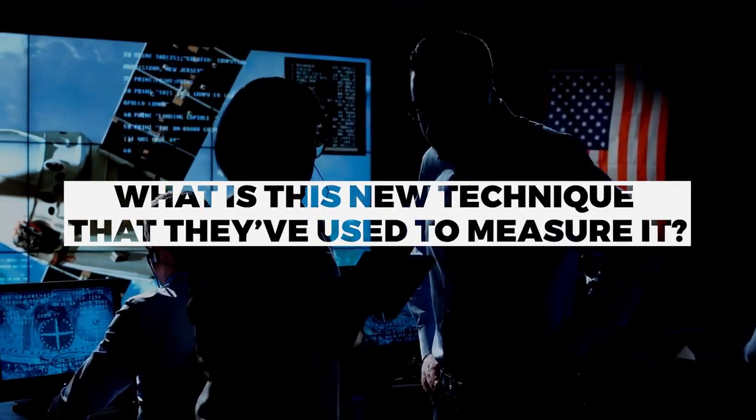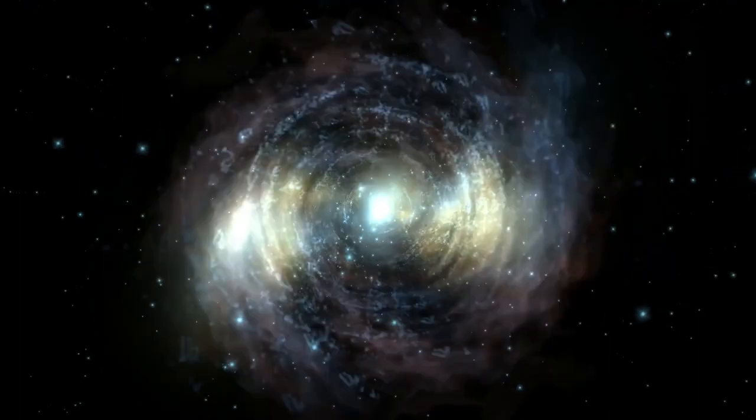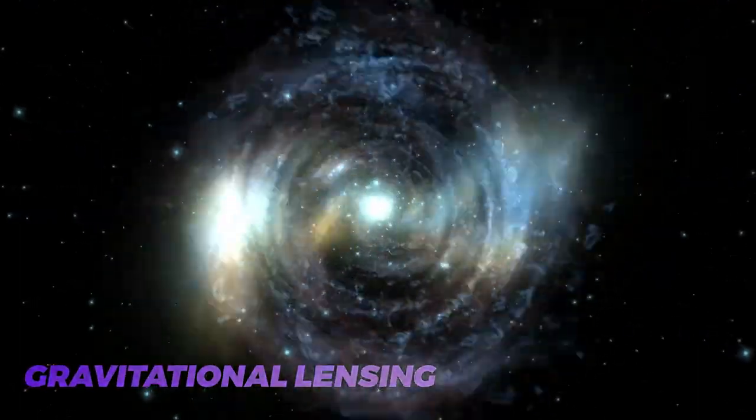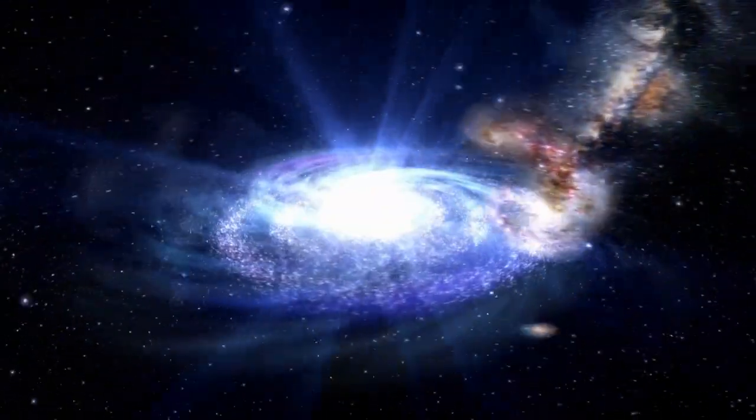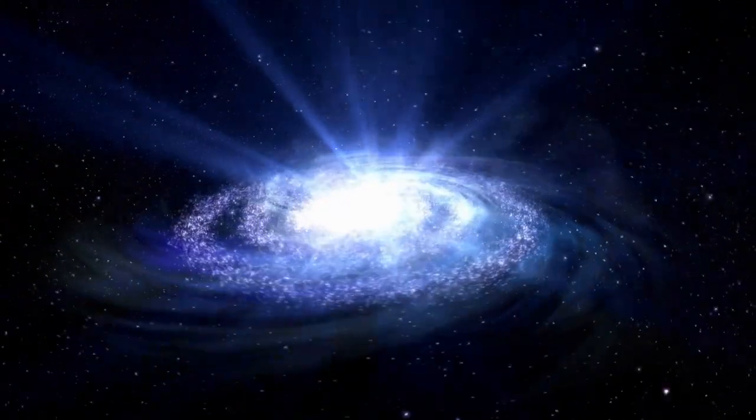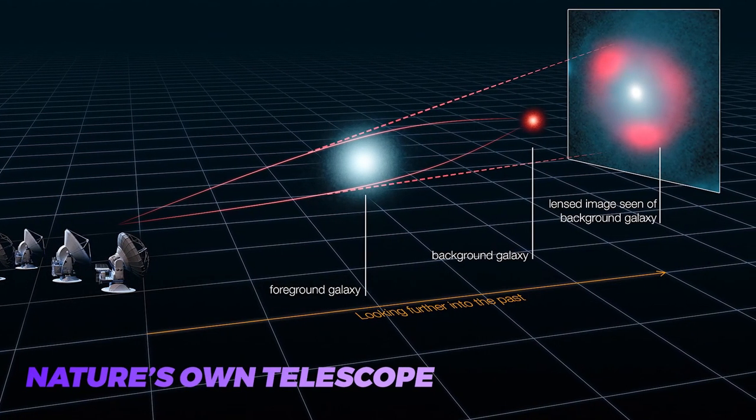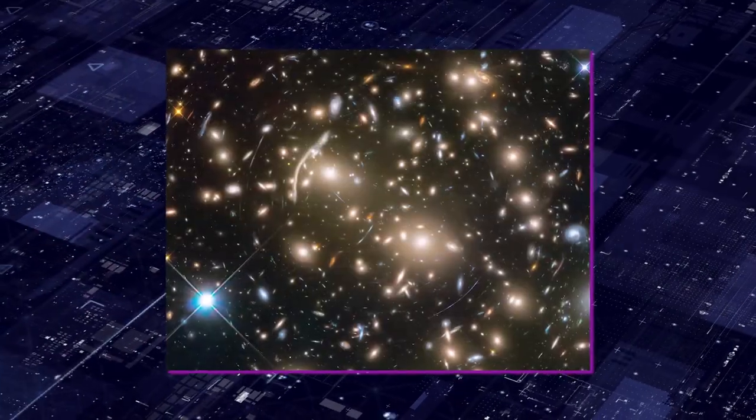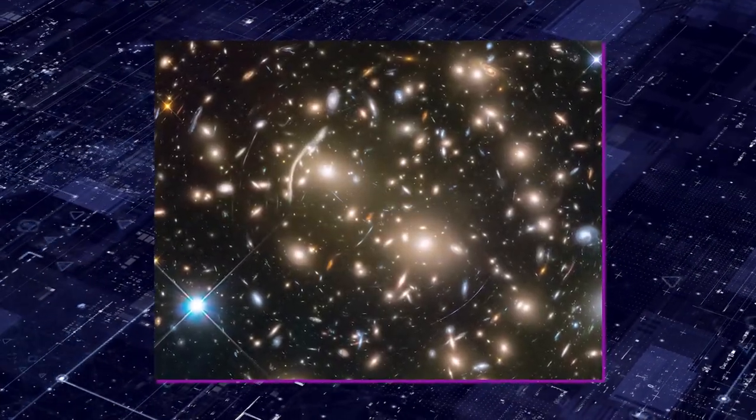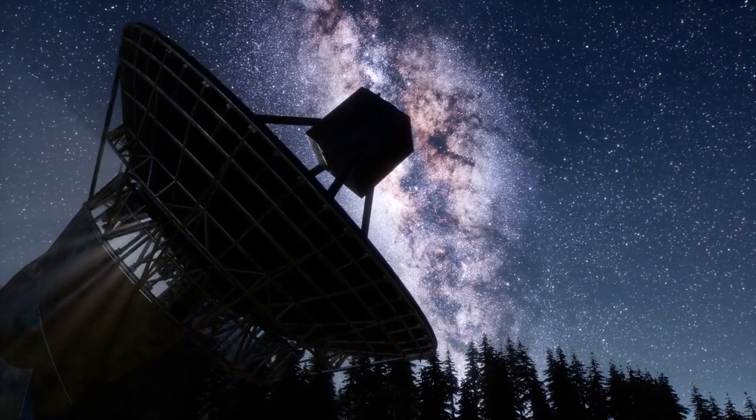What is this new technique that they've used to measure it? The technique utilized is known as gravitational lensing, and it's the result of gravity bending the light around extremely massive objects. This is, for all intents and purposes, nature's own telescope, and gravitational lensing frequently helps astronomers increase the magnification of objects that are too far away to be properly visible to human-made telescopes.